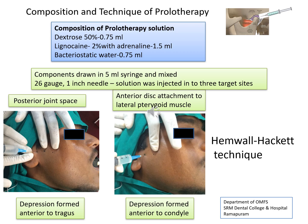The posterior joint space was located by the depression formed anterior to the tragus while opening the mouth. The needle was directed anteromedially to avoid penetration into the ear. Since TMJ disc displacement is usually anterior, priority is to accomplish repair of the extended or torn posterior disc attachment. The second site was the anterior disc attachment to the lateral pterygoid muscle, identified by the depression formed slightly anterior to the condyle when the patient closes the mouth. This muscle is often foreshortened or in spasm in cases of chronic disc displacement, so injecting the prolotherapy solution here can strengthen the tendinous attachment of this muscle to the disc.